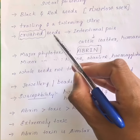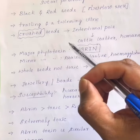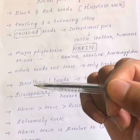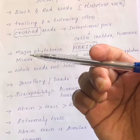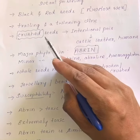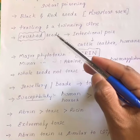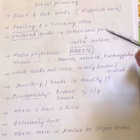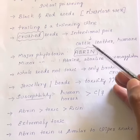Only crushed seeds are poisonous. The whole seed as such is not poisonous. If we ingest the whole seeds of Abrus precatorius, or if whole seeds are given to any animal, it will not kill the animal. Only the crushed or broken seed will produce toxicity.